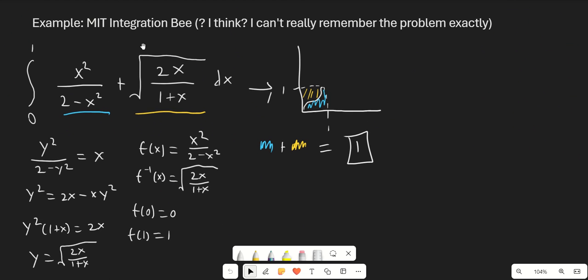Here's an example problem. I believe this is from the MIT integration bee. It's the integral from 0 to 1 of x squared over 2 minus x squared plus root 2x over 1 plus x dx. When I saw this I knew there was some weird trick involved because both integrals are pretty easy to solve but they don't seem connected at all. I saw square root in one, x squared in the other and figured we're dealing with inverse functions. Indeed, these two functions are inverses of each other.